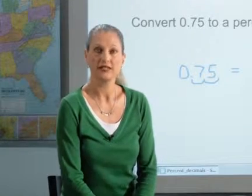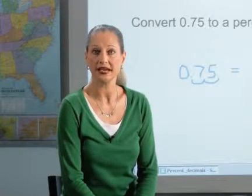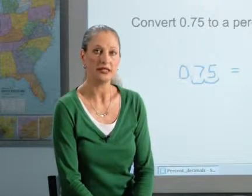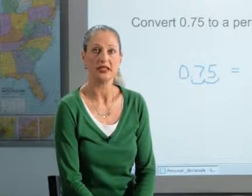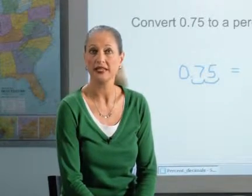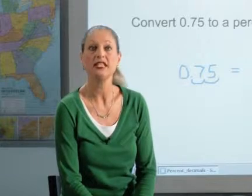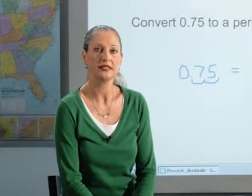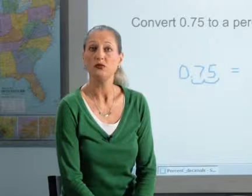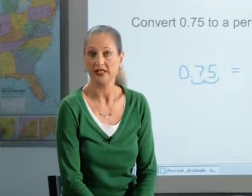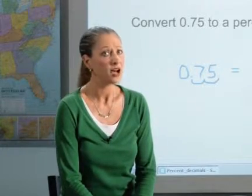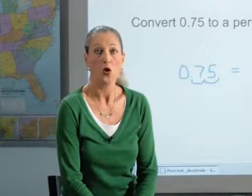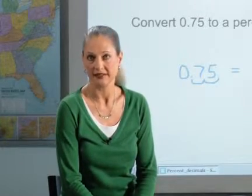For example, when converting 47% to a decimal, students can use reasoning to determine that since 47% is approximately 50%, this amount represented as a decimal would be written 0.47, not written 47.0 or 4.7.